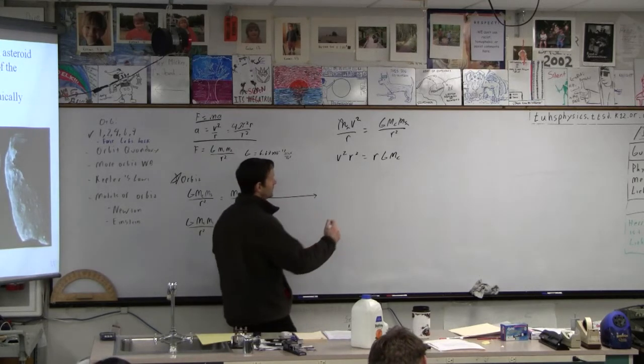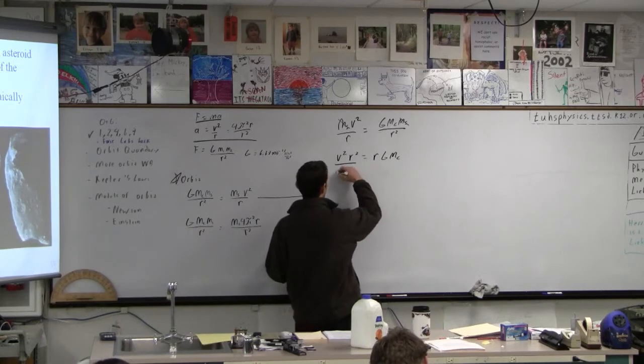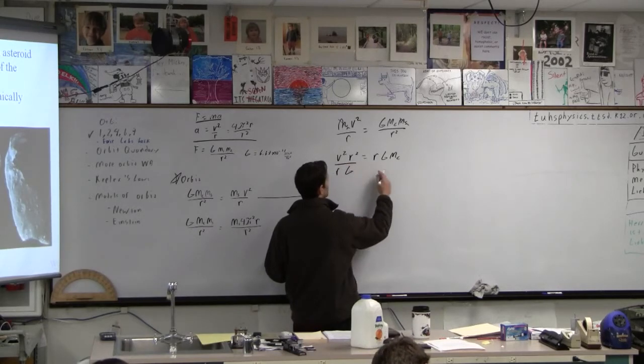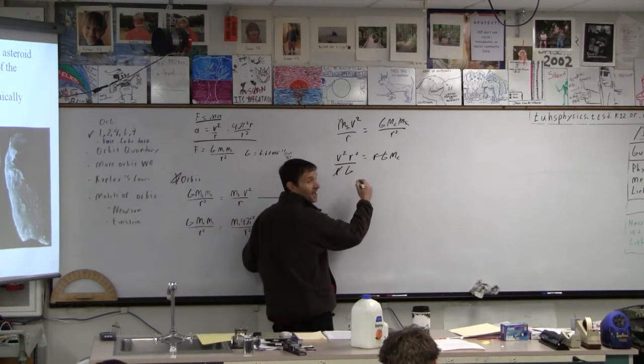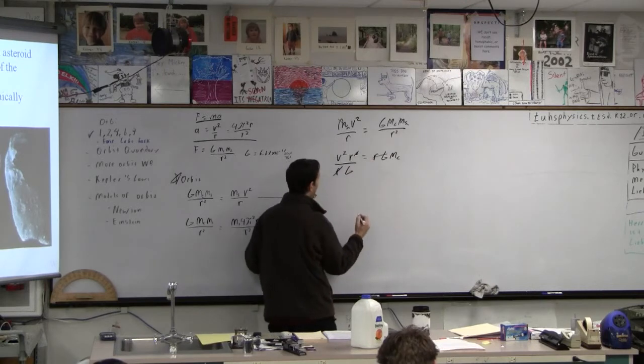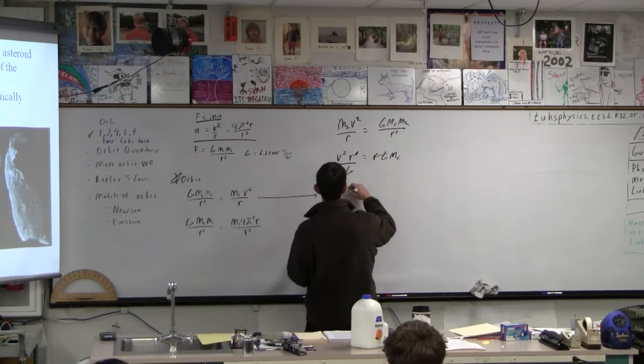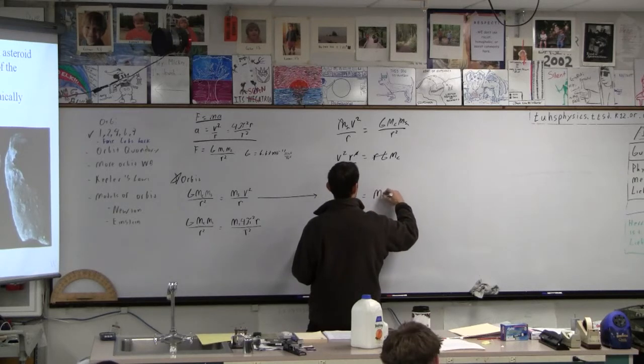Okay. And then what do we have to do? Divide by r g, right? And then we are going to cancel something, right? And then so v squared r over g is mc.